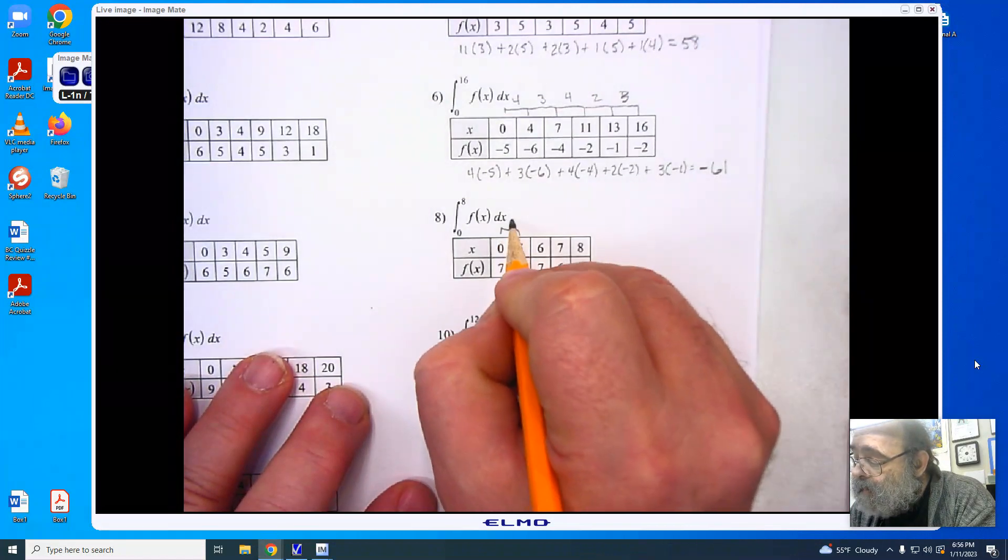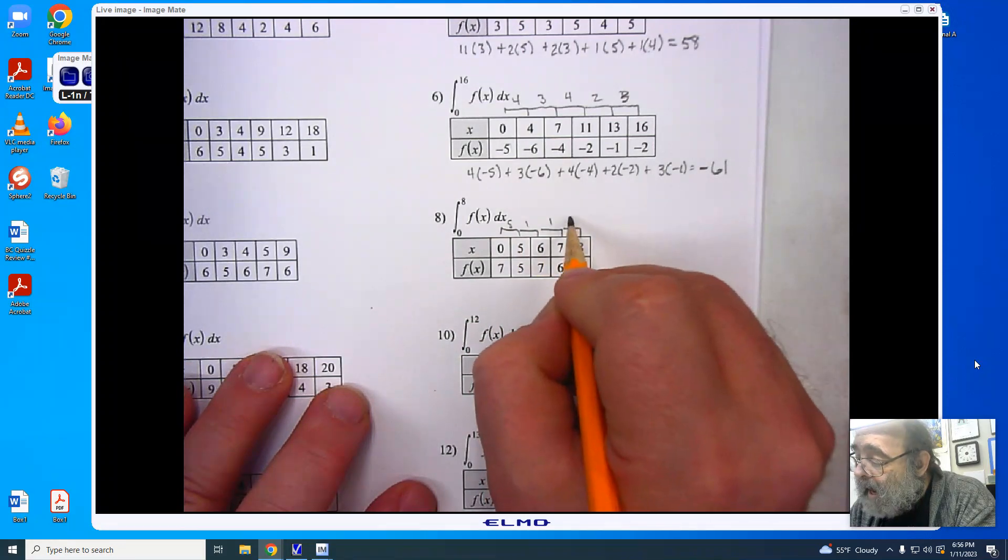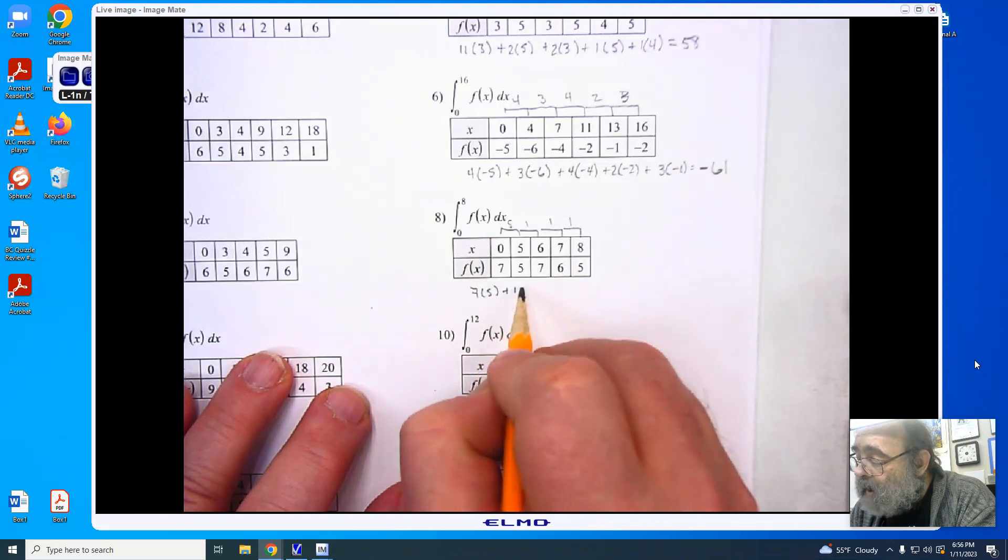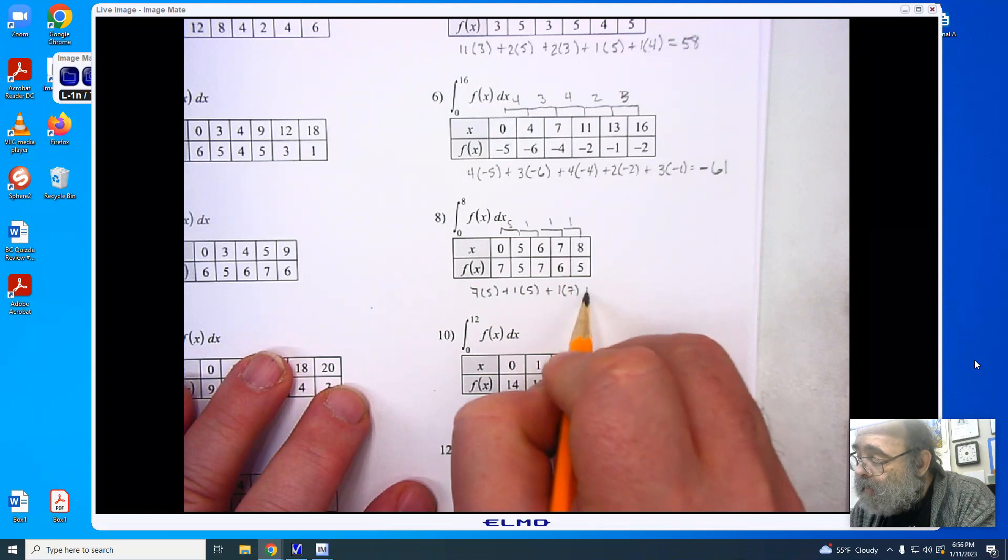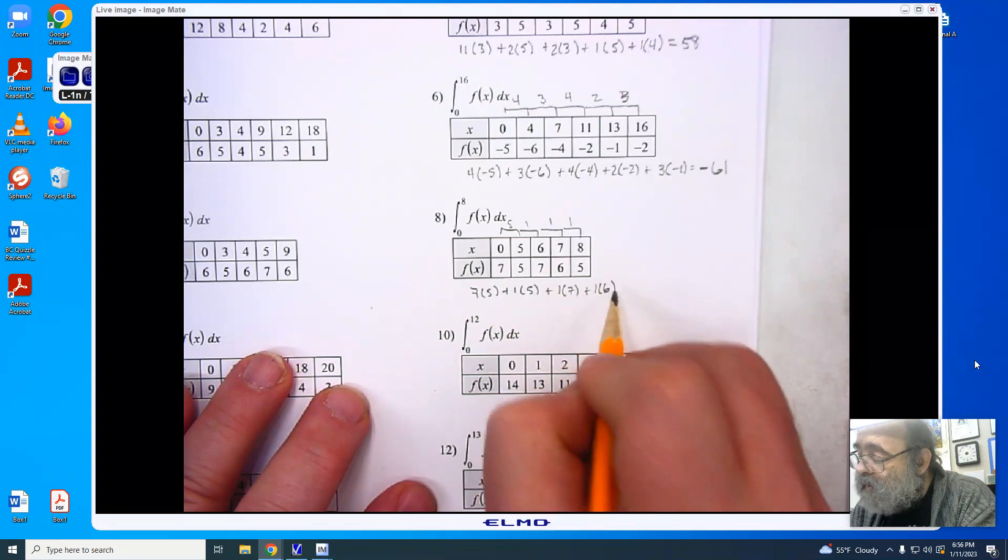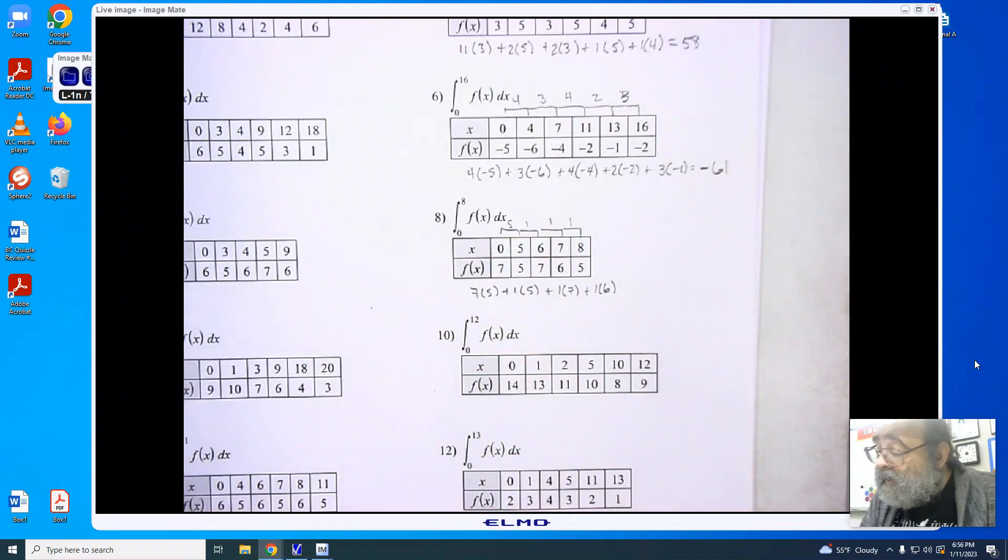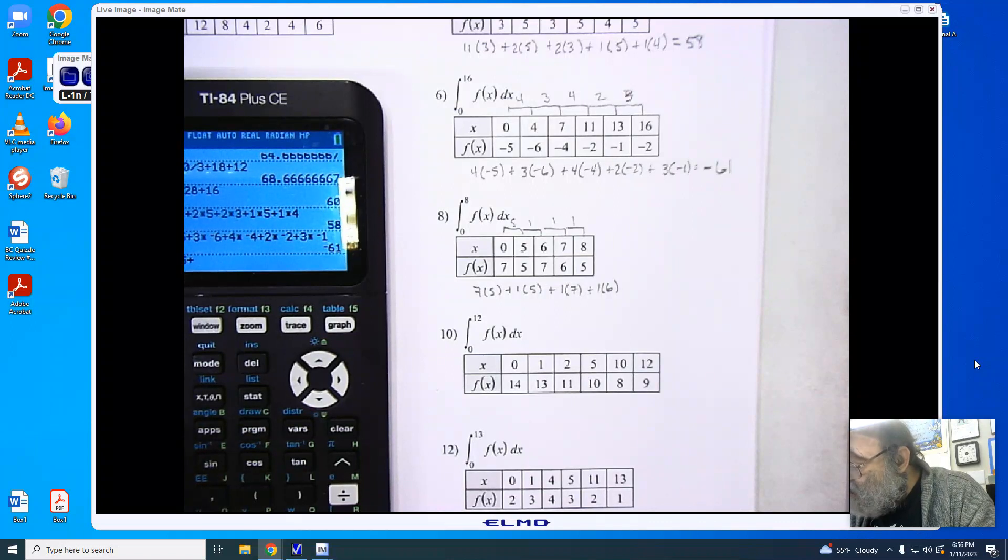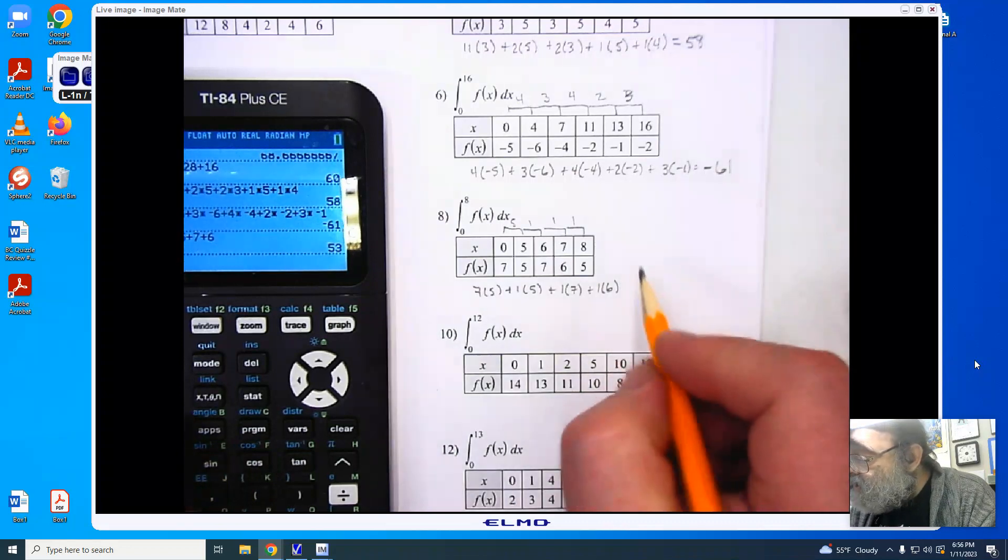Gap of 5. Gap of 1. Gap of 1. Gap of 1. 7 times 5, plus 1 times 5, plus 1 times 7, plus 1 times 6. Notice we have the number of products as we have gaps along our line. Adding them up, we're now taking the 35, and we're adding 5, then 7, and then 6. And our answer is 53.